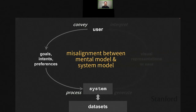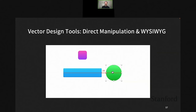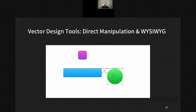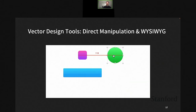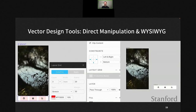In general there is a misalignment between people's mental models and visualization models, making it hard for people to articulate what they want. Bostock and Heer argued that many powerful visualization systems can be intimidating to novices or inflexible — the abstractions used may be foreign to users. As a result, designers often resort to vector-based drawing programs to realize their intent. In vector-based drawing tools, direct manipulation and what-you-see-is-what-you-get interfaces are offered — moving a shape around shows dynamic guides indicating alignment and distances between objects.